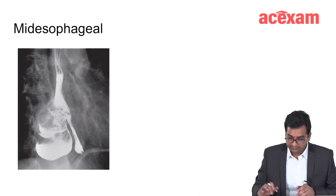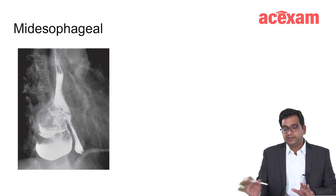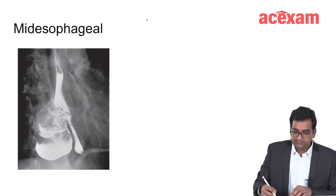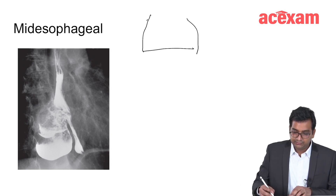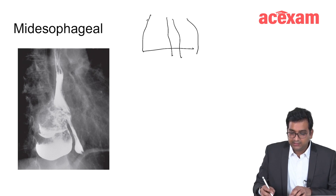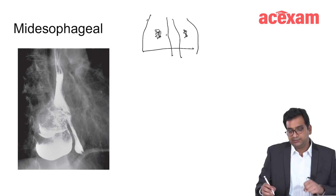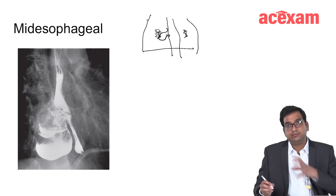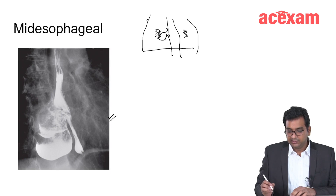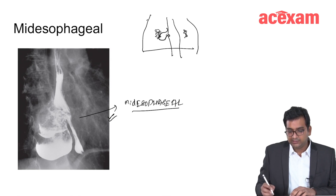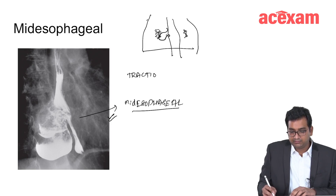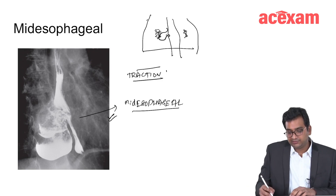The next topic is mid-esophageal diverticula. In the chest, when there is histoplasmosis or tubercular lymphadenitis, there will be fibrosis. Due to this fibrosis, there is traction on the esophagus leading to formation of a mid-esophageal diverticula. This is a traction diverticula, unlike Zenker's which is a pulsion diverticula.